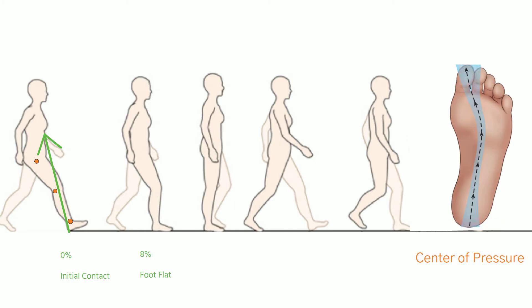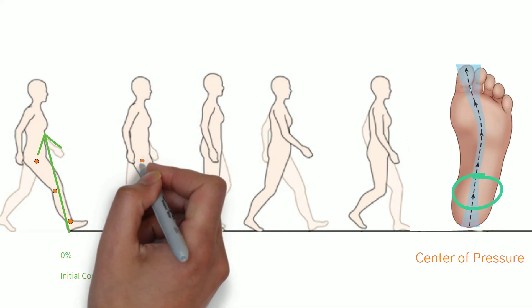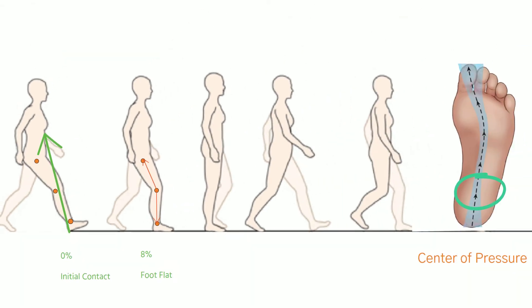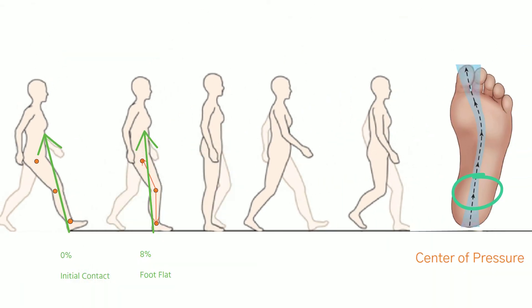At foot flat, the biggest change in range of motion is at the knee joint, because it goes into flexion. Thus, the ground reaction force is posterior to the ankle and anterior to the hip, but posterior to the knee joint.